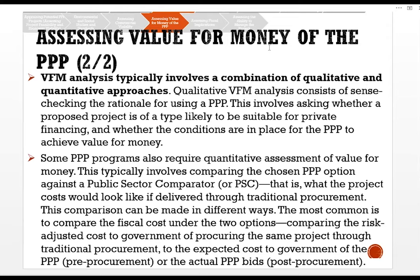The public sector comparator represents what the cost would look like if delivered through traditional procurement. This comparison can be made in different ways. The most common is to compare the fiscal costs under the two options — comparing the risk-adjusted cost to government of procuring the same project through traditional procurement to the expected cost to government of the PPP, either pre-procurement or based on actual PPP bids post-procurement.